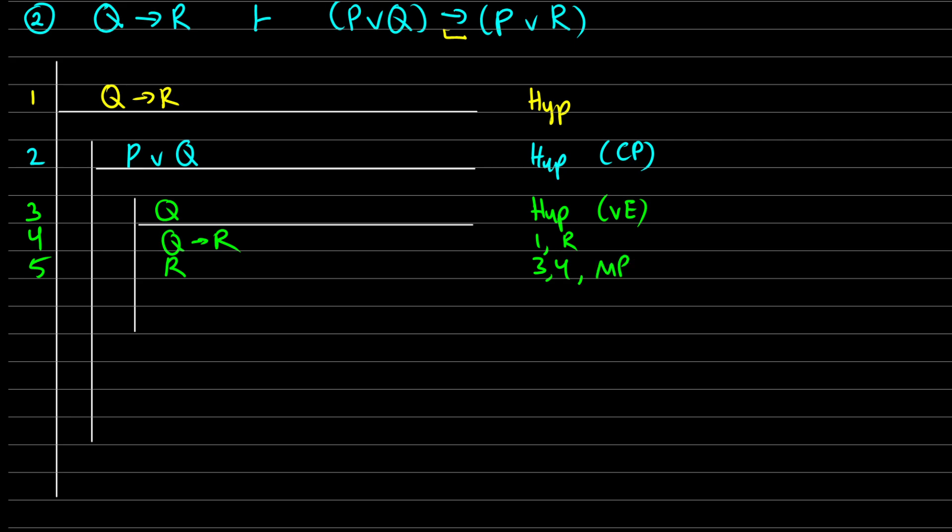Okay. So if I assume Q, I get R, but I need to get P or R. That's my goal, to get P or R.